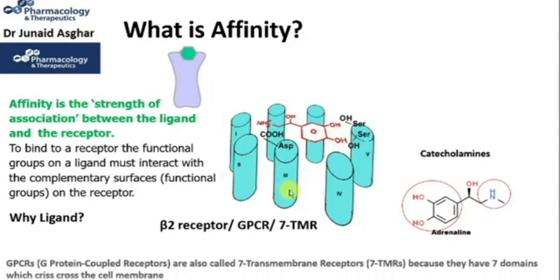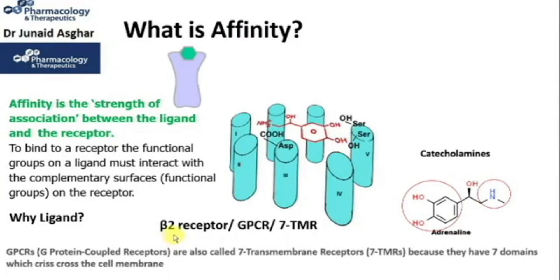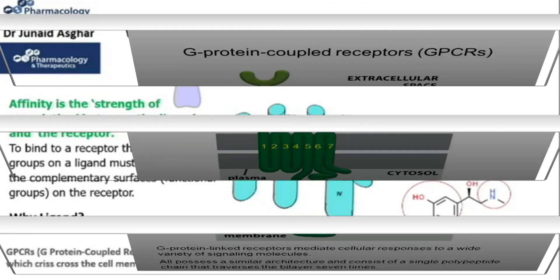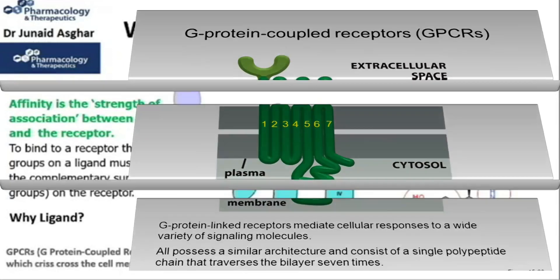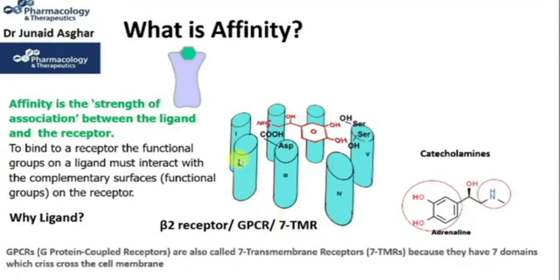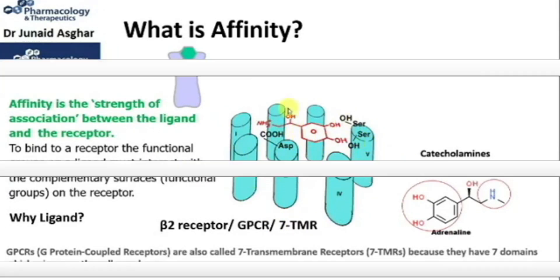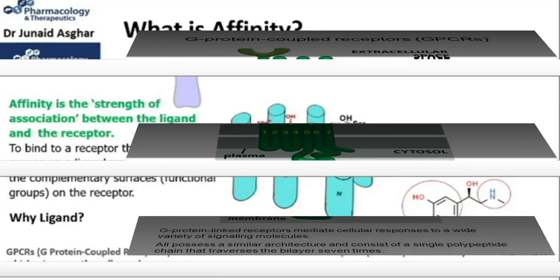Let me show you the structure of the beta-2 receptor. The beta-2 receptor is a GPCR — a G-protein coupled receptor. It is also called a 7-TMR, or 7-transmembrane receptor, because the receptor spans the cell membrane seven times. You can see the seven domains here: 1, 2, 3, 4, 5, 6, and 7 — these seven domains criss-cross the cell membrane, hence the name seven transmembrane receptor.